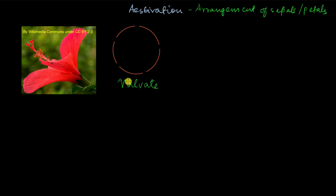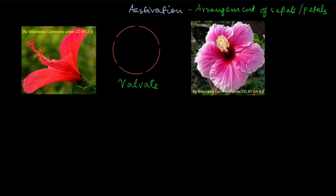Keep in mind that whatever aestivation we discuss is applicable to both sepals and petals. So valvate aestivation can belong to sepals, as in this case. However, if you look at the petals of a hibiscus flower, you will see a different picture — they are not exactly side by side, there are overlaps at the edges.